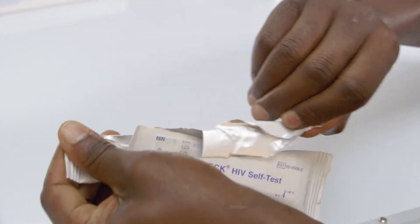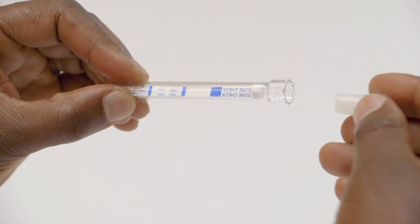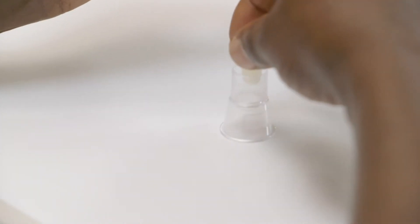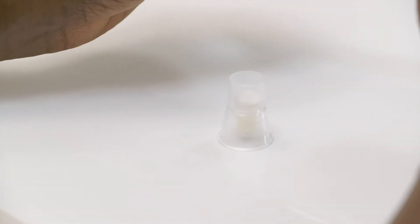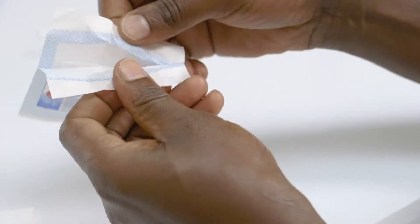Tear open the foil pouch. Carefully remove buffer cap. Insert buffer cap into the test stand. Open alcohol swab and sterile gauze pad.